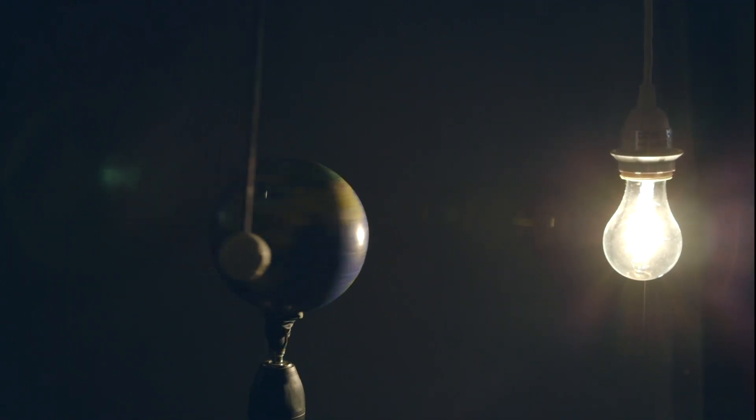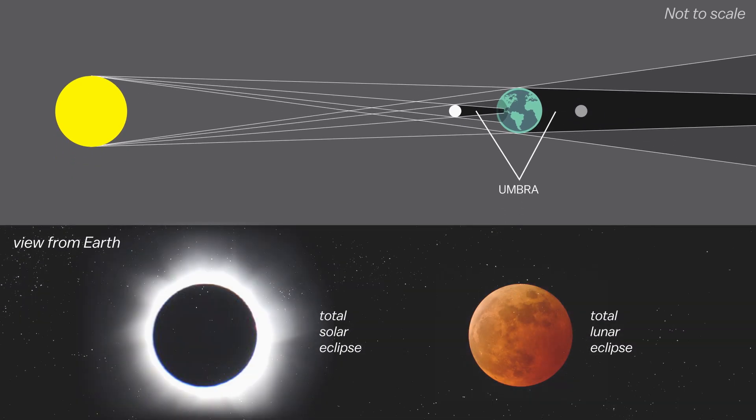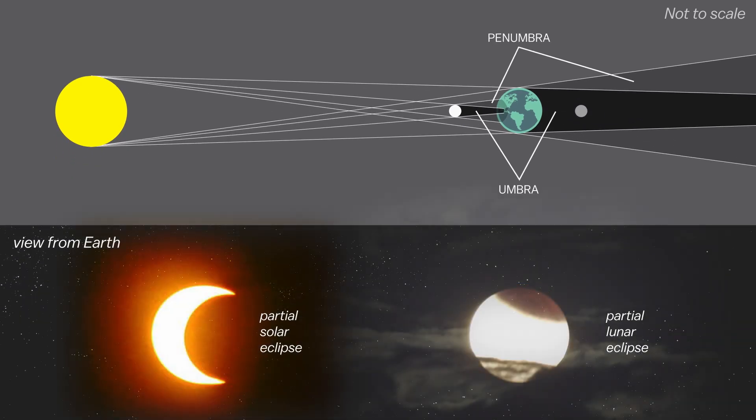Total eclipses occur within the darkest part of that shadow, the umbra. In the lighter part of the shadow, the penumbra, we get partial eclipses.